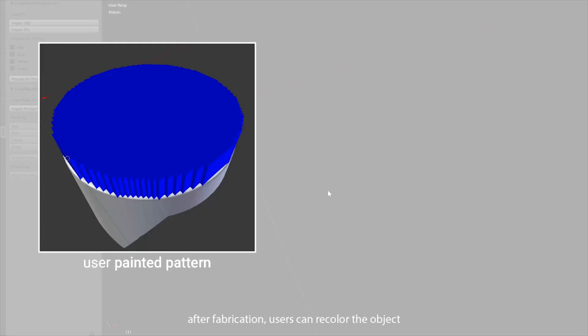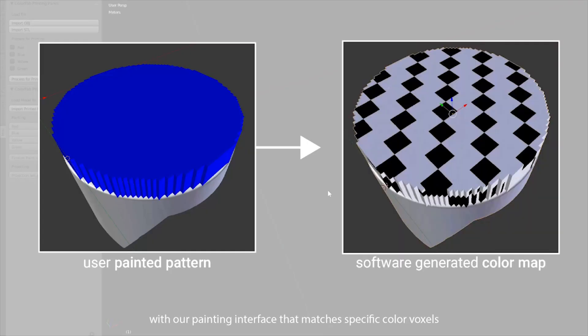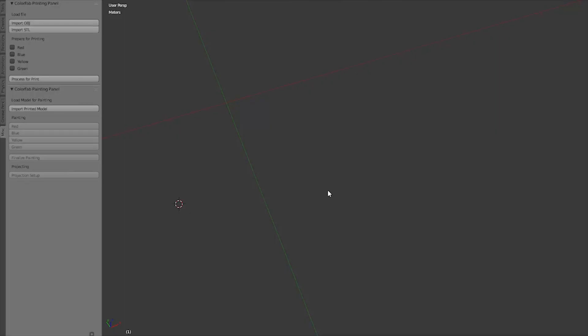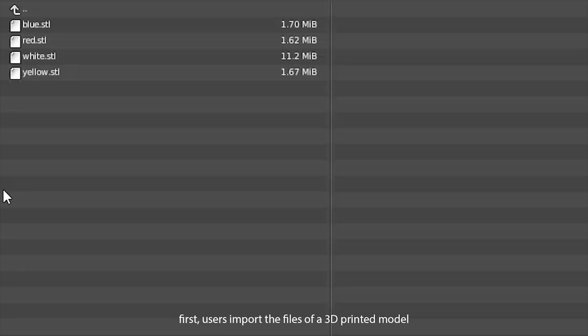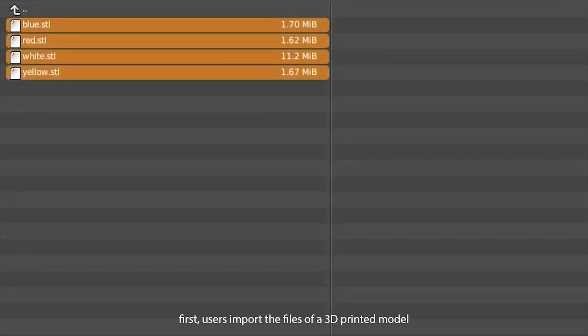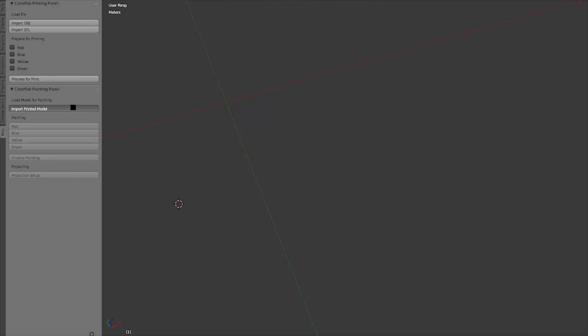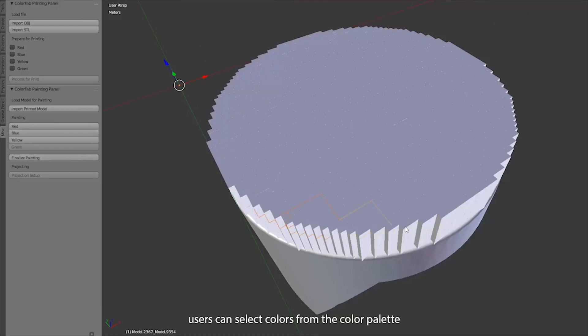With our painting interface that matches specific color voxels with the desired pattern, first users import the files of a 3D printed model. Users can select colors from the color palette to draw the desired pattern onto the 3D model.